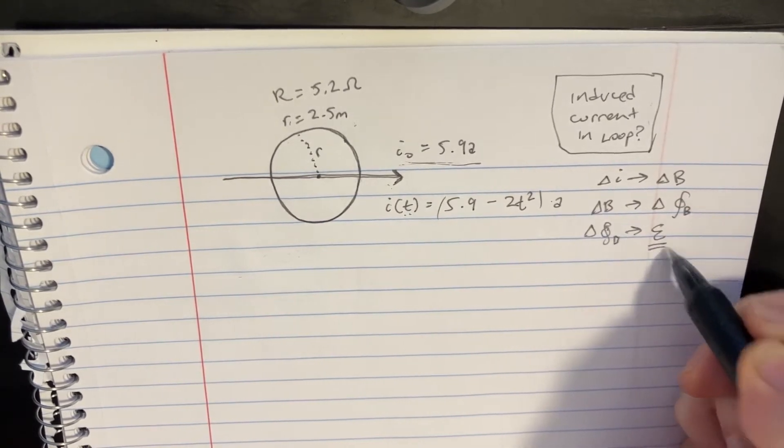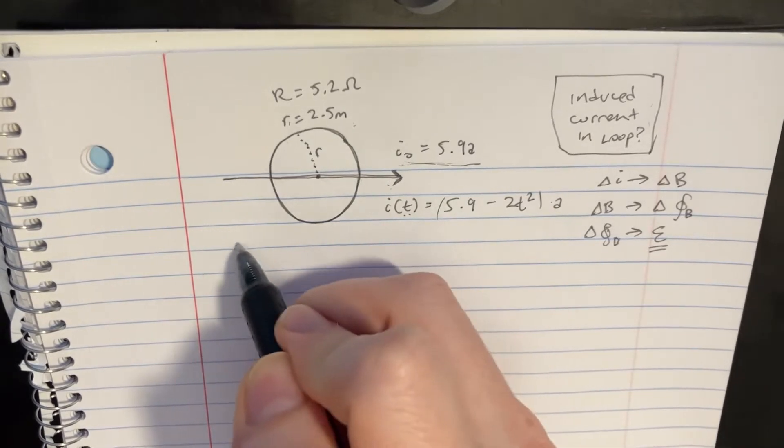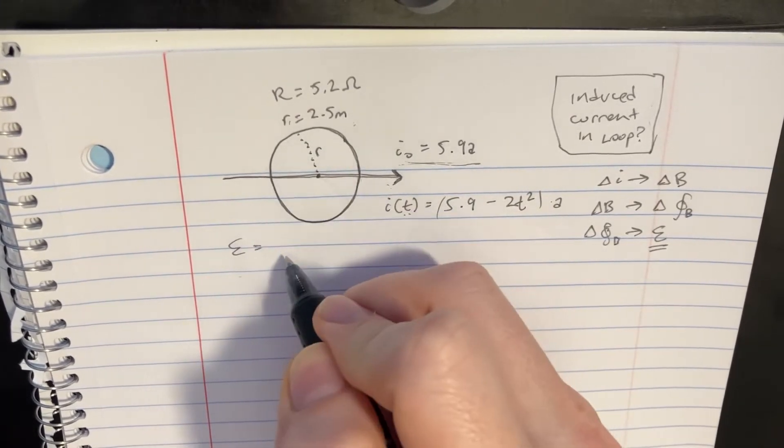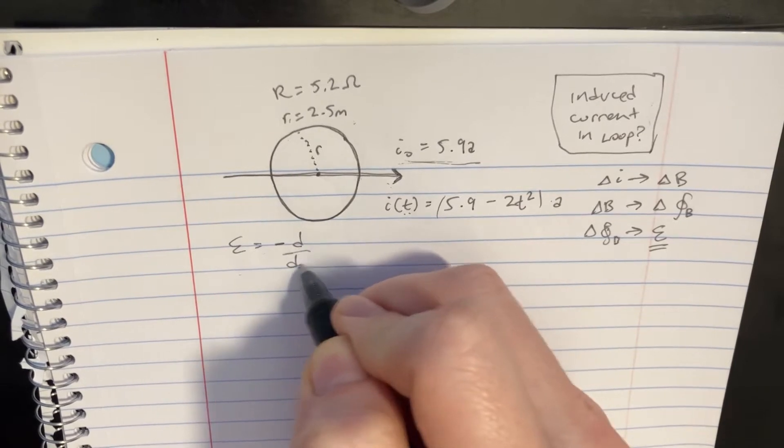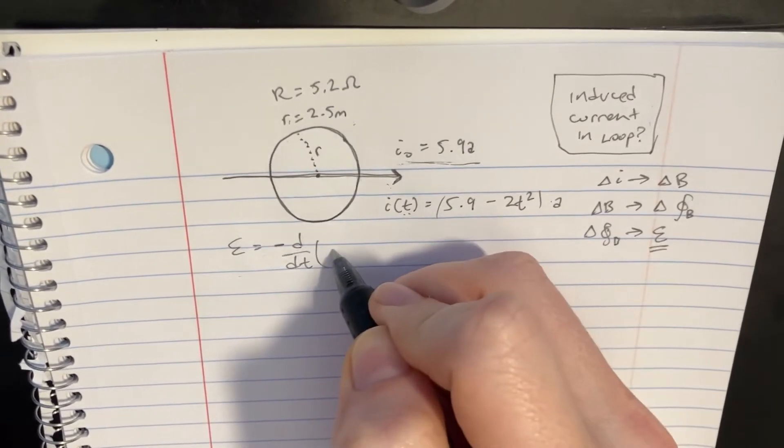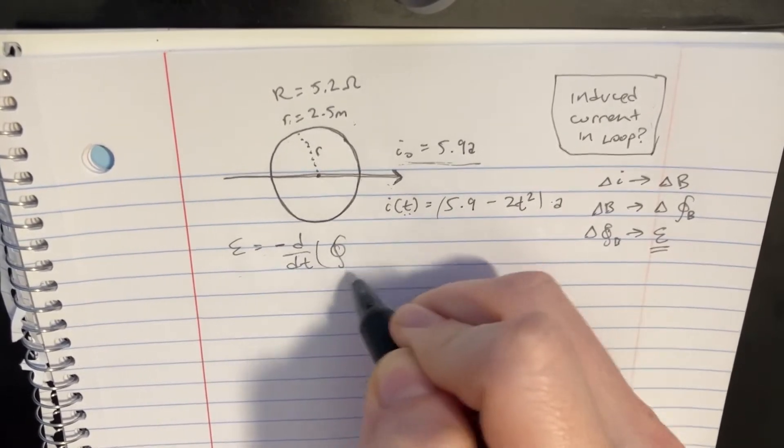And we can look at the formula like this. It would be the negative time derivative of the flux.